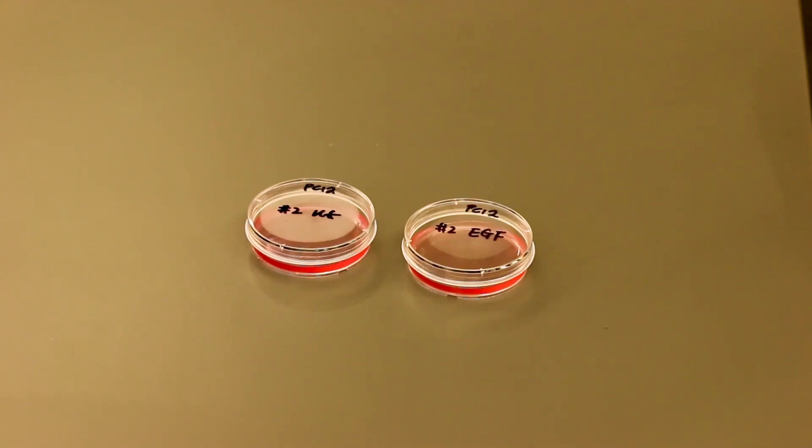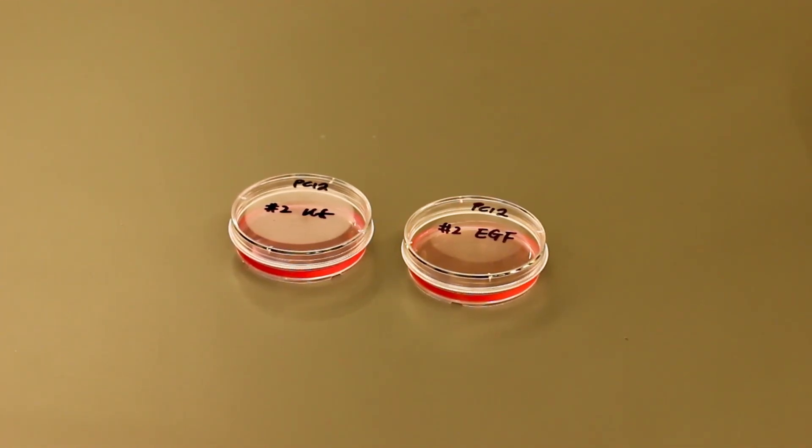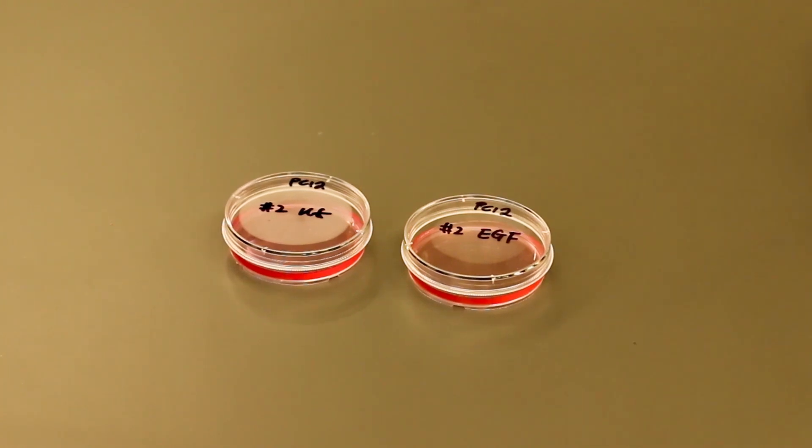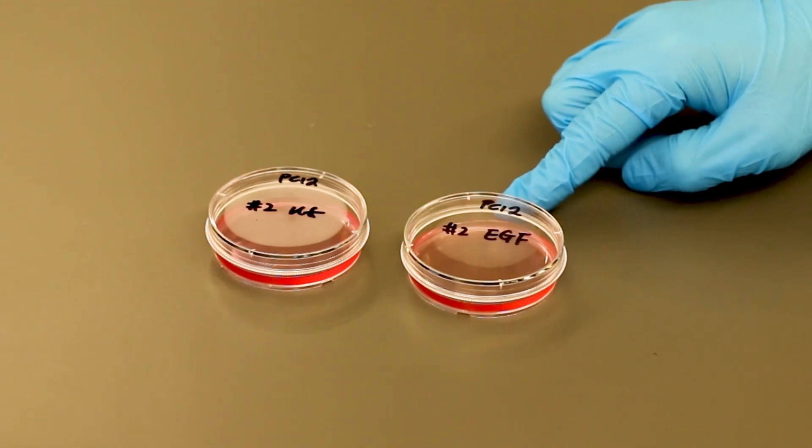Before the treatment, be sure to label on the list of the culture dishes with your table number and sample names, such as UT for untreated and EGF sample.